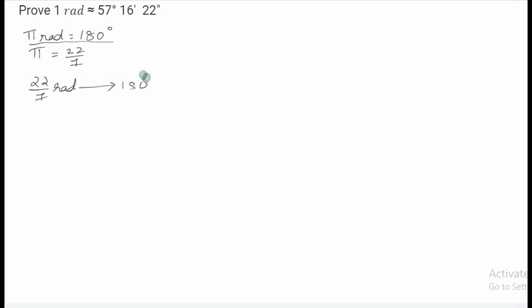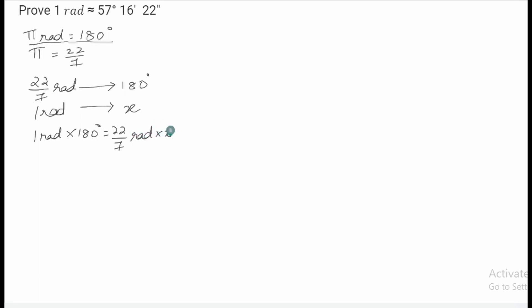So how much would one radian be? Let's put this as x. When we cross multiply, we get one radian into 180 degrees, which is equal to 22 by 7 radian into x. Therefore x in terms of degrees is equal to 180 into 7 by 22.